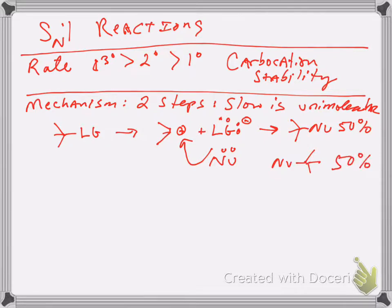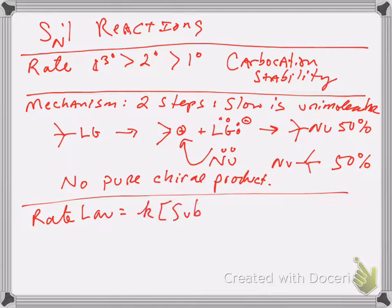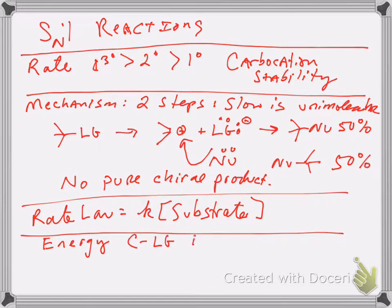So in SN1, we do not get a pure product. We get a 50-50% mixture of two different products in the chemical reaction. So no pure chiral product. The rate law, since the slow step is unimolecular, we would expect it would be overall first order. And looking at the energy diagram, if the carbon leaving group bond is weaker than the carbon nucleophile bond, it could be either way, but in this case let's say it's weaker, then we would see something like this. We'd have an intermediate, overall exothermic, and that would be for SN1.